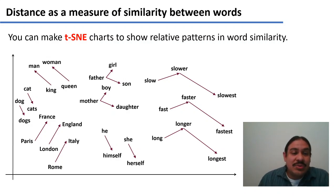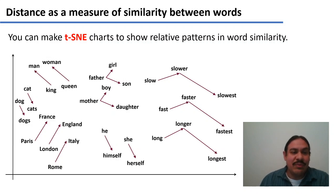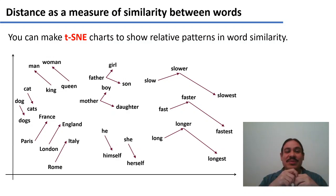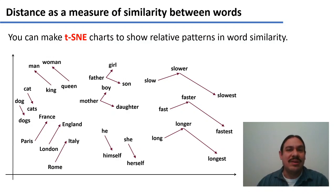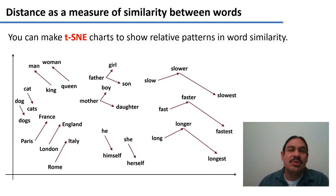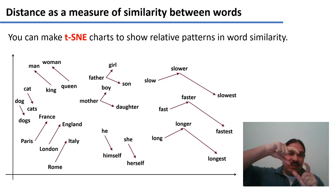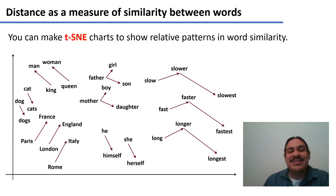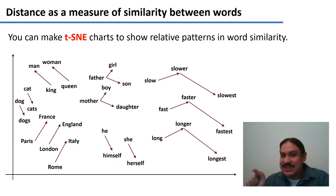As you can see here, the t-SNE chart is going to show you the relationship between Paris and France, for example, in the lower left. It also has the relationship between London and England, and Rome and Italy. The distance between Paris and France is going to be roughly equal to the distance between London and England, and also equal to the distance between Rome and Italy — they're going to have roughly the same similarity. You can also calculate similarities between pairs like dog and dogs, or cat and cats. You can even do interesting things like calculate similarities between the same root with different morphemes: slow, slower, slowest have roughly the same configuration as fast, faster, fastest, and long, longer, longest.